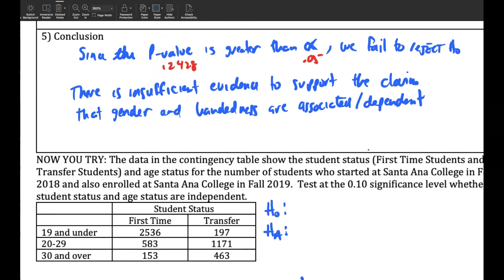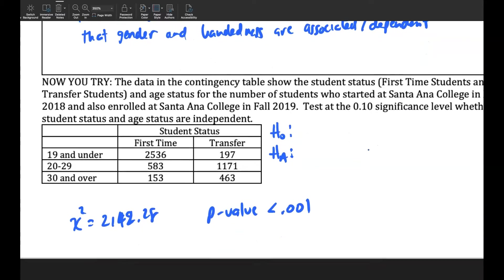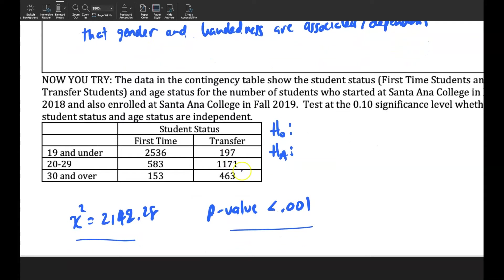That's it. And then we have the conclusion. And then if you want to try on your own, see if you can get this chi-squared and p-value. See if you can do that correctly. That's it. Thank you.